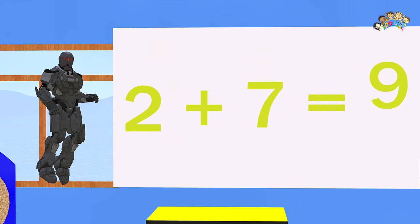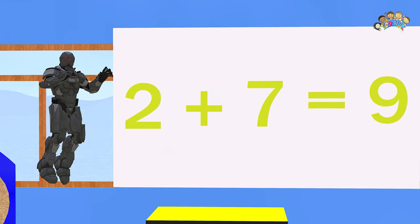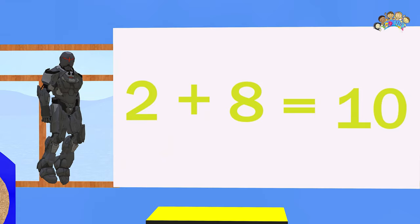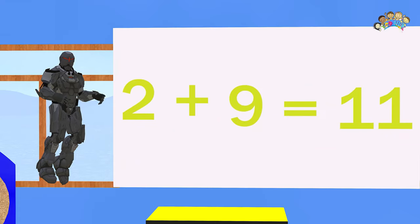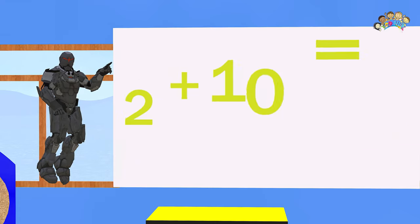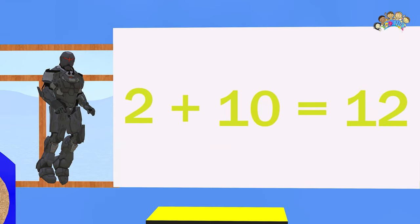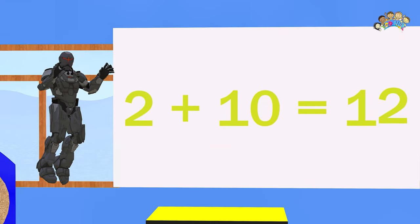Two plus seven is nine. Two plus eight is ten. Two plus nine is eleven. And two plus ten equals twelve.